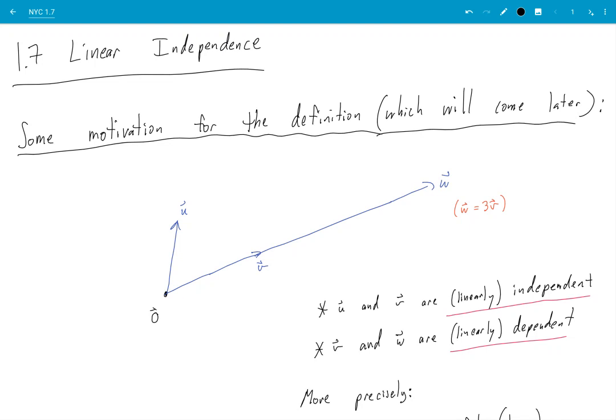Okay, we're going to motivate the definition before hitting you with it. Looking at the diagram, you can see that v and w are certainly connected in some way, and w is 3v. But u and v, you know, are not. So that's very roughly what we're talking about.